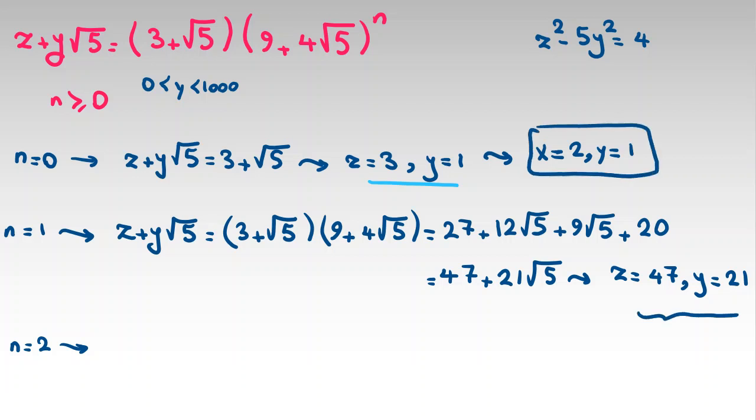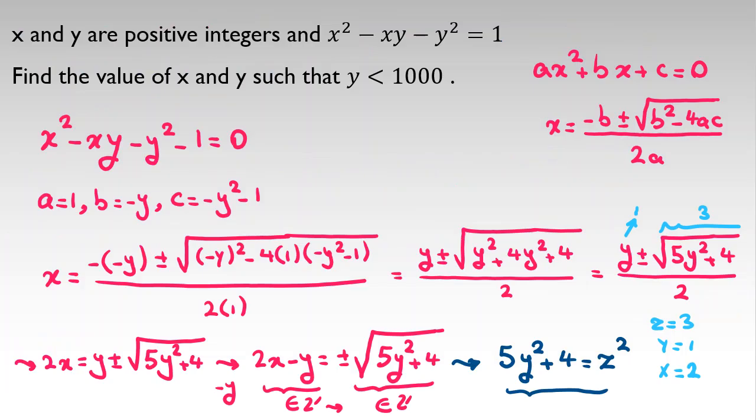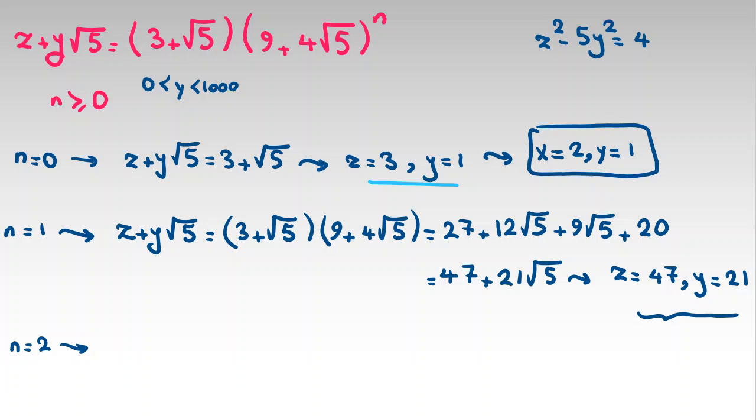Let's check the second case. x is 47, z is 47, y is 21. (21 + 47)/2 = 68/2 = 34. If you replace it, it works. x = 34, y = 21. Our second answer.